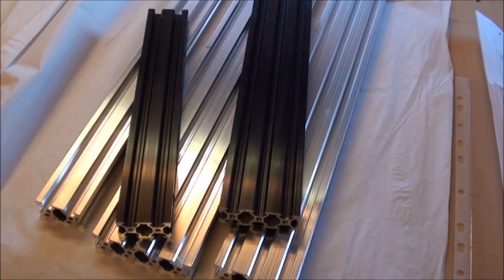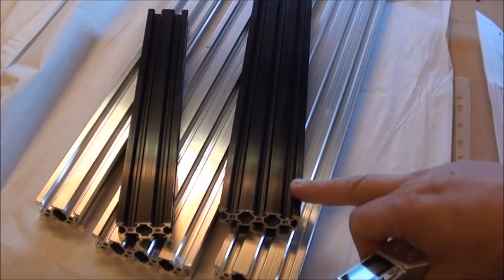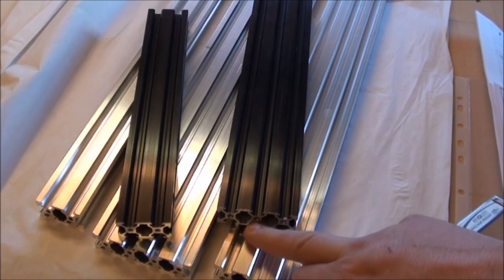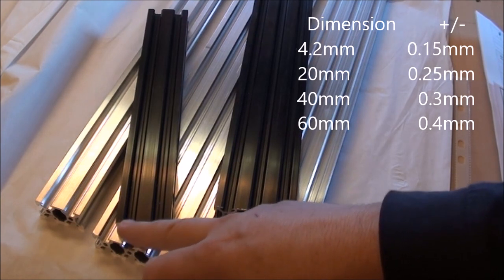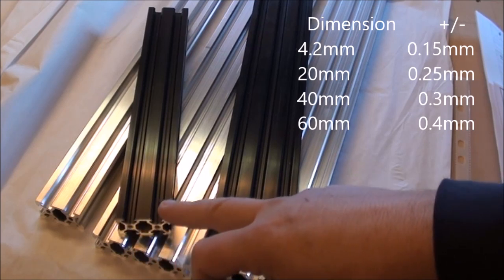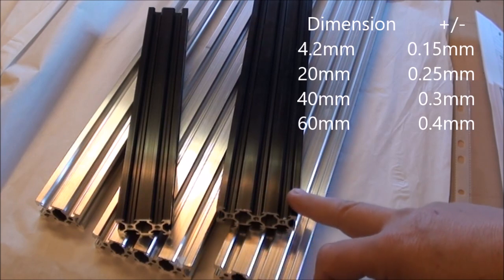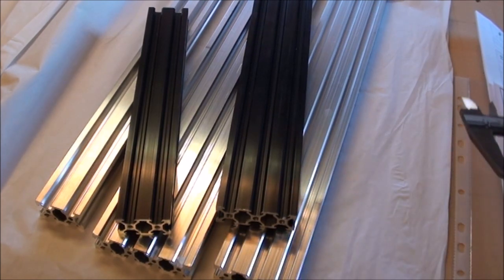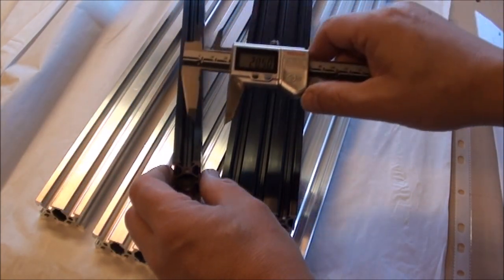So I'll just do some measurements of the tolerance, and with profiles like these, the tolerance becomes bigger as the size becomes bigger. For example, the small holes at the end, 4.2 millimeter has a tolerance of 0.15 millimeter. If you take the width of the 20, the tolerance is 0.25 millimeters. Going on the 40, you have 0.3 millimeters, and on the 60, you have 0.4 millimeters. And of course, tolerances will always be a percentage, and that's why the number increases as the dimension.